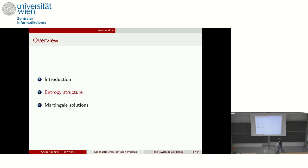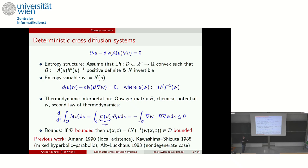We found — and others before us — that there is a thermodynamic structure behind which can be exploited. Let's consider the deterministic equation first. By entropy structure, I mean that there exists a so-called entropy density, or free energy density, defined on some set D which may be bounded or unbounded. It contains all the component densities or mass fractions. This is convex and has the property that the diffusion matrix multiplied by the inverse of the Hessian of the entropy density gives a new matrix B, which is positive definite or positive semidefinite. I also assume the first derivative of the entropy density is invertible.